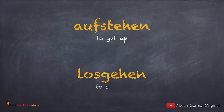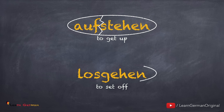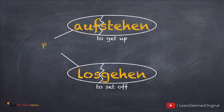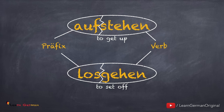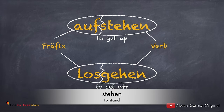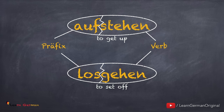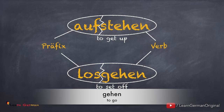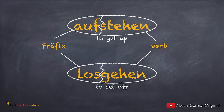The two verbs are 'aufstehen' and 'losgehen'. The first verb is made of two elements: 'auf' and 'stehen', whereas the second verb is made up of 'los' and 'gehen'. In such verbs, 'auf' and 'los' are the prefixes, whereas 'stehen' and 'gehen' are the normal verbs. Adding a prefix to a normal verb changes the meaning — for example, 'stehen' means to stand whereas 'aufstehen' means to get up; 'gehen' means to go whereas 'losgehen' means to set off. Such verbs are known as trennbare Verben.